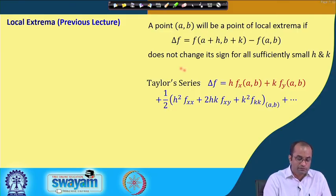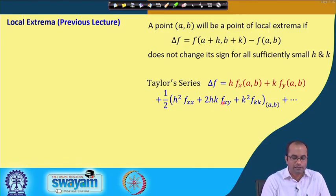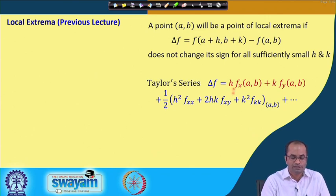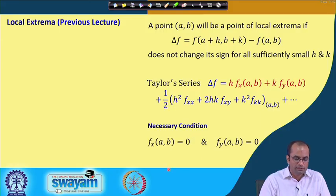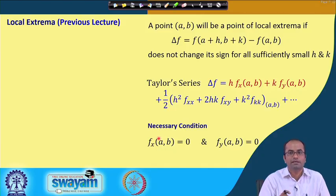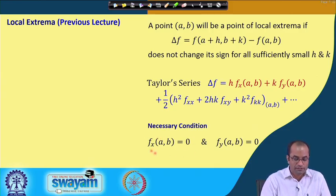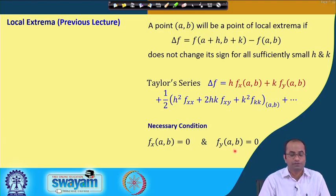We try to get the behavior of delta f — the sign of delta f — by using the Taylor series expansion of f(a+h, b+k) around the point (a, b). From that we obtained the necessary conditions: to have a local maxima or minima, f_x at (a, b) must be 0 and f_y must be 0.